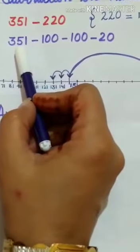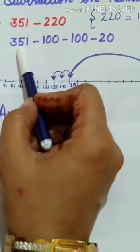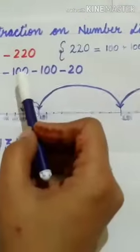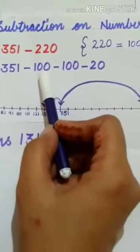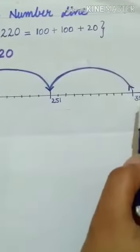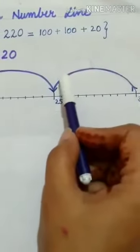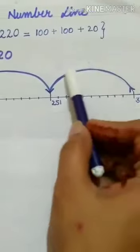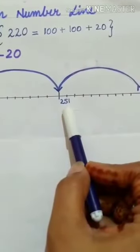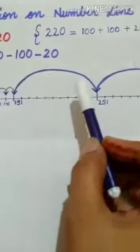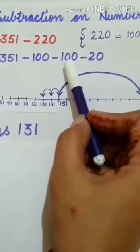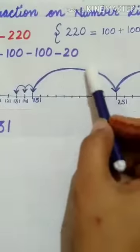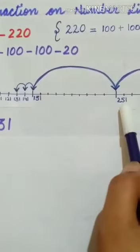See here, this is 51, the next division is 61, then 71, 81, 91, 101, 111, 121, 131, 141, and then 151. Same way here also I have divided these in 10 equal parts. Now for this, just move 100 steps back from 351. We land on 251.